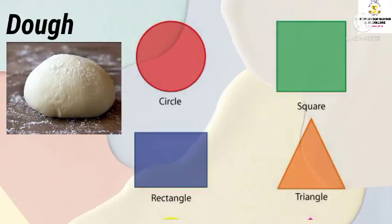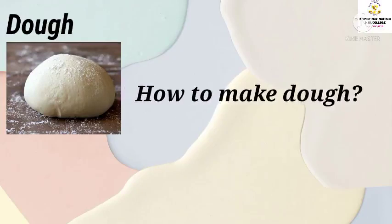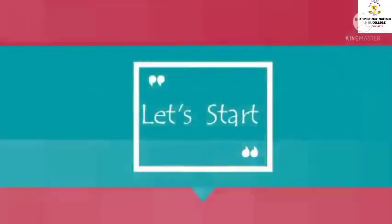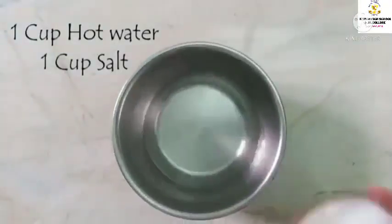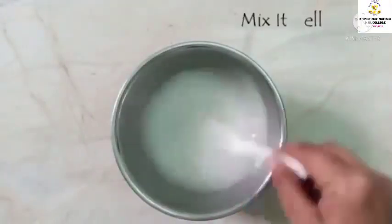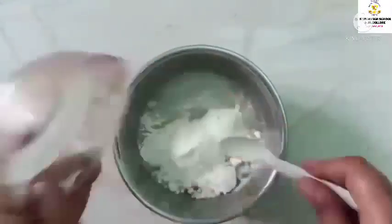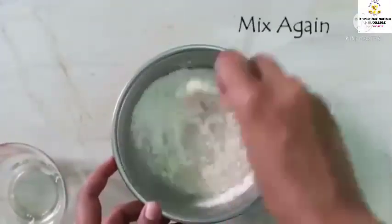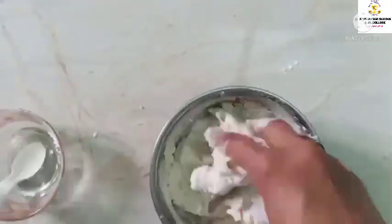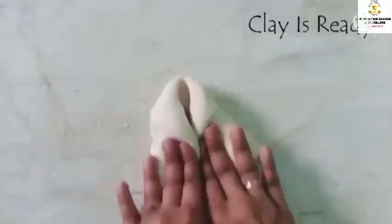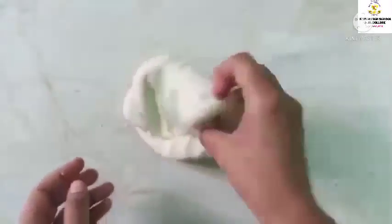Students, now we will learn how to make a dough. Let's start. Take 1 cup hot water, 1 cup salt, mix it well. Take some flour — that is, maida — mix it again. Put some more flour and make it like a clay dough. Students, I hope you all understood how to make clay dough. Now we will make shapes out of it.